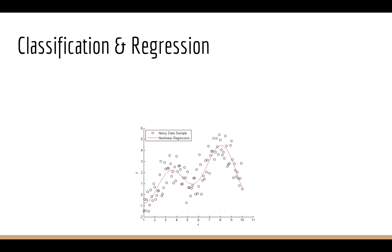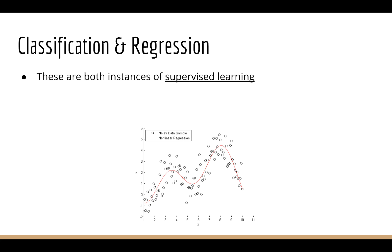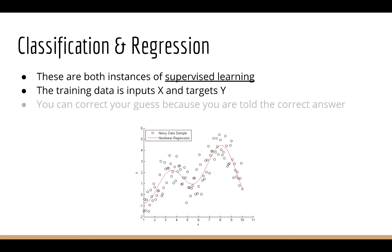For this section, we looked at both classification and regression. For both these problems, we're given some training data in the form of inputs x and targets y. In machine learning terminology, this is called supervised learning because you're told the correct answer and you can correct your guess based on the true target.